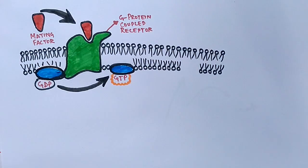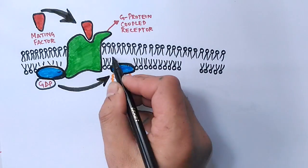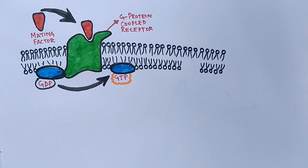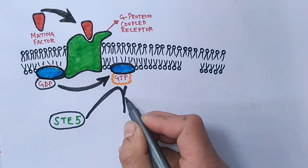With the association of GTP, the G protein becomes activated. The activation of G protein recruits a STE5 protein in the yeast cell, which is actually a scaffold protein, and after this the phosphorylation cascade kicks in.